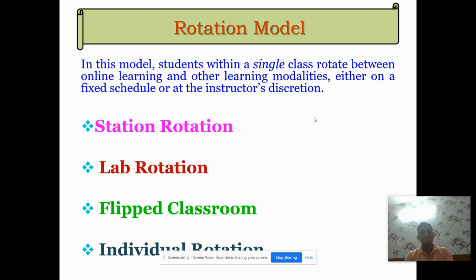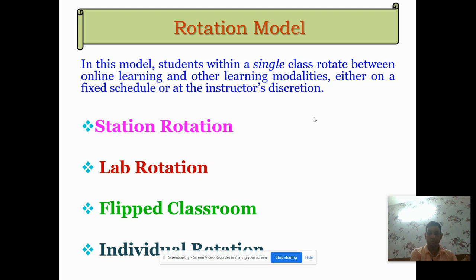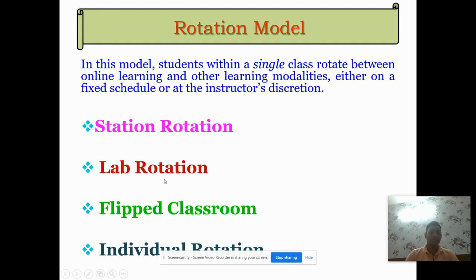In the lab rotation model, students from the traditional classroom move to the lab for practical purposes. In the flipped classroom, what happens is the reverse of traditional classroom: initially in traditional learning, a lecture is given by the teacher at the institution and homework is done at home. But in flipped classroom, the learner watches video lessons at home, and discussion and doubt-clearing sessions are done at the institution.